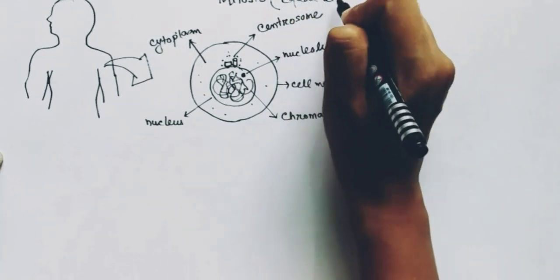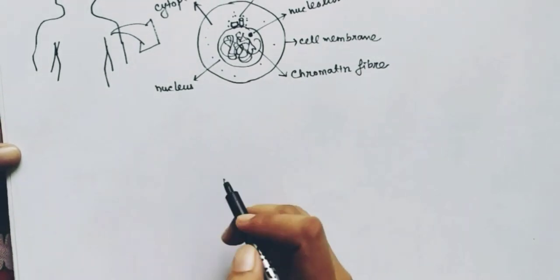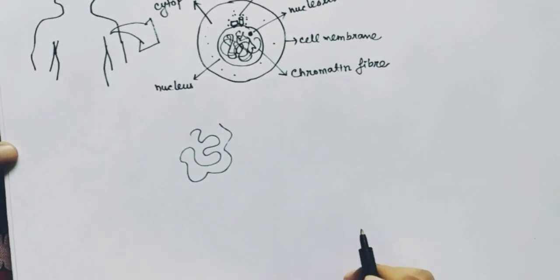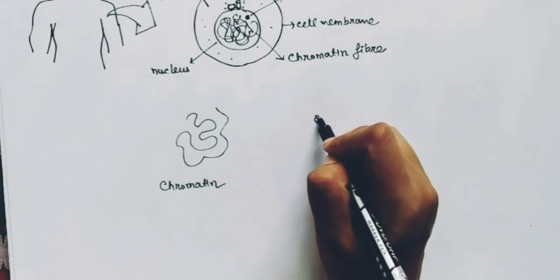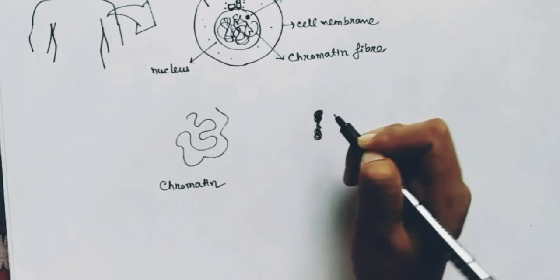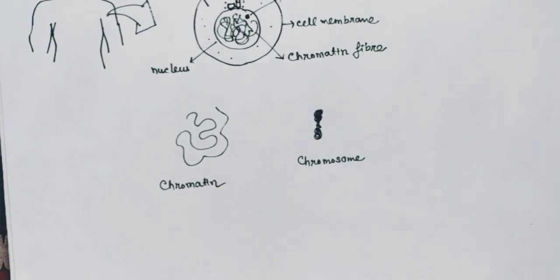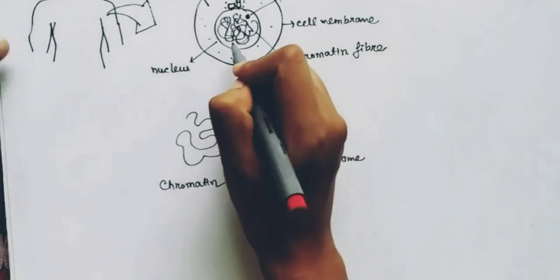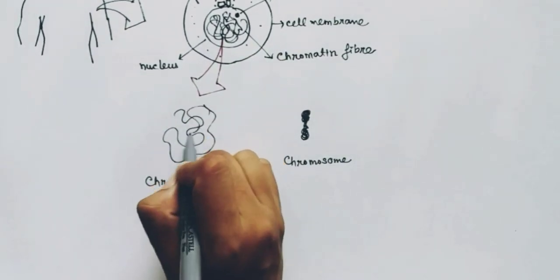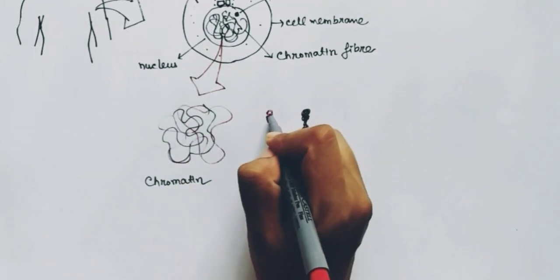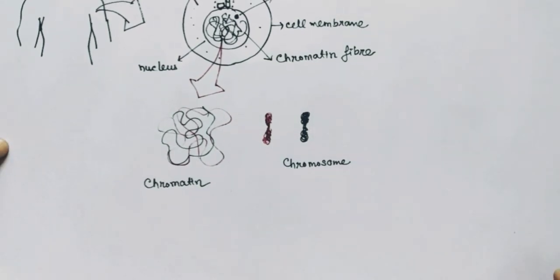By mitotic cell division we get the exact copy of the mother cell, which is why mitosis is called equal division. Before starting with mitosis, I want to clarify the difference between chromatin fiber and chromosome. Chromatin fiber is the loosely packed form of the chromosome. When chromatin fiber gets tightly packed, it becomes the chromosome. Chromatin fibers are the loosely packed chromosomes normally seen inside the nucleus.